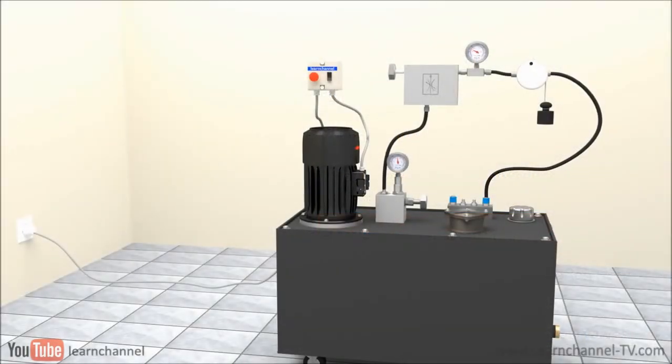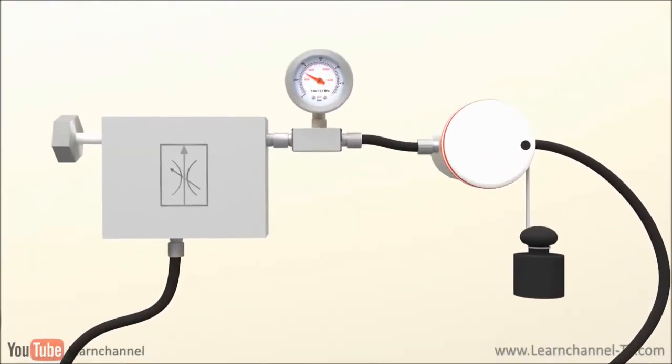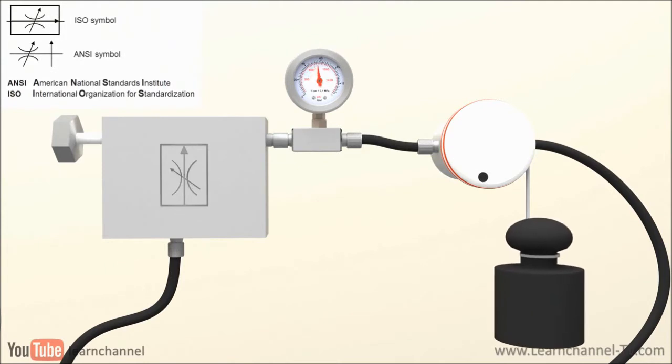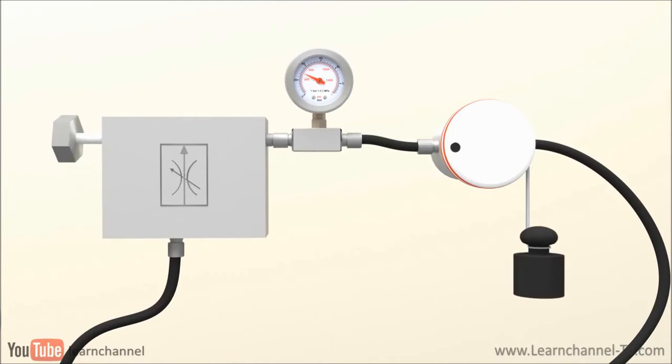Unfortunately, using a simple throttle leads to change in volume flow when load changes. So if you want to keep the speed of a cylinder or hydraulic motor constant, even with different loads, you should use a pressure compensated flow controlled valve. Or to say it another way, a pressure compensated flow control valve maintains an almost constant flow rate in spite of pressure changes across the valve.